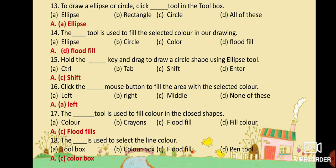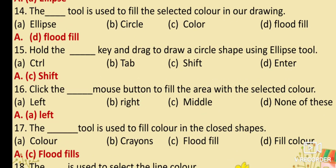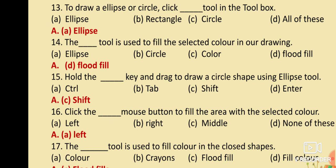MCQ No. 13: To draw an ellipse or circle, click dash tool in the toolbox. Option A: Ellipse. Option B: Rectangle. Option C: Circle. Option D: All of this. Your answer is Option A: Ellipse. To draw an ellipse or circle, click the ellipse tool in the toolbox.